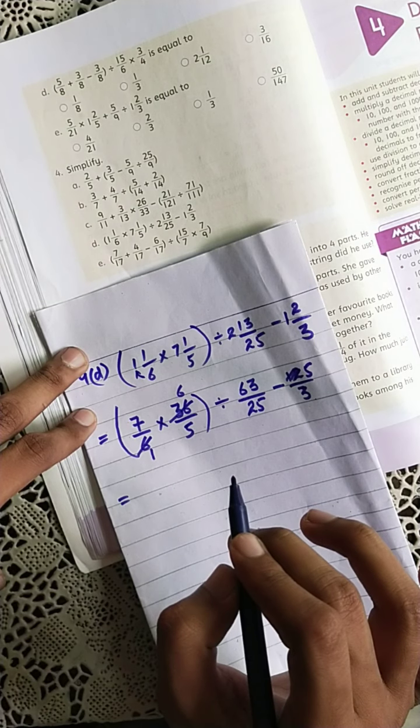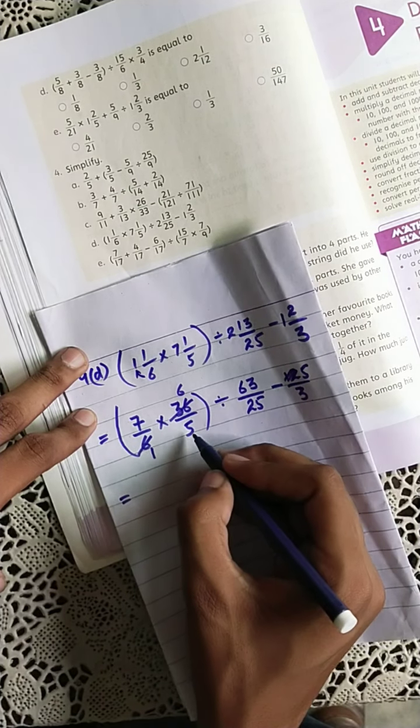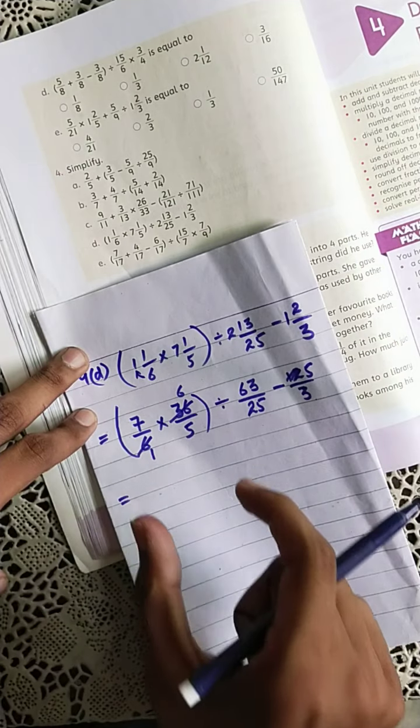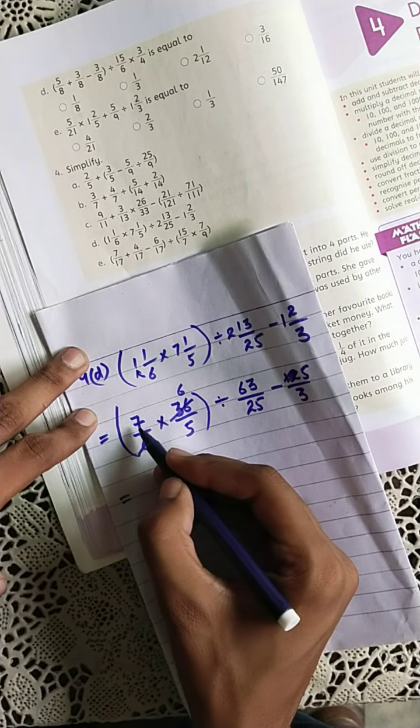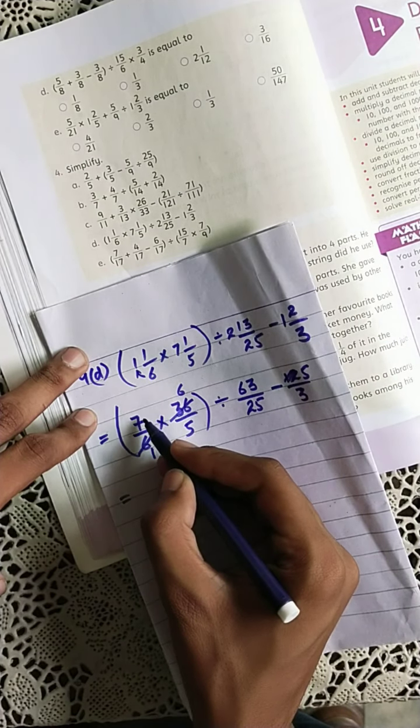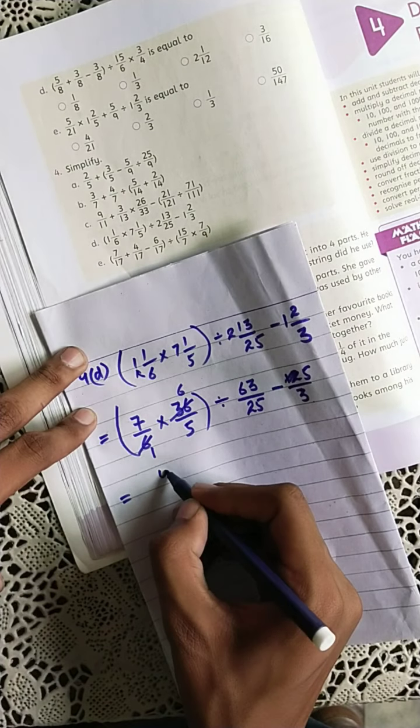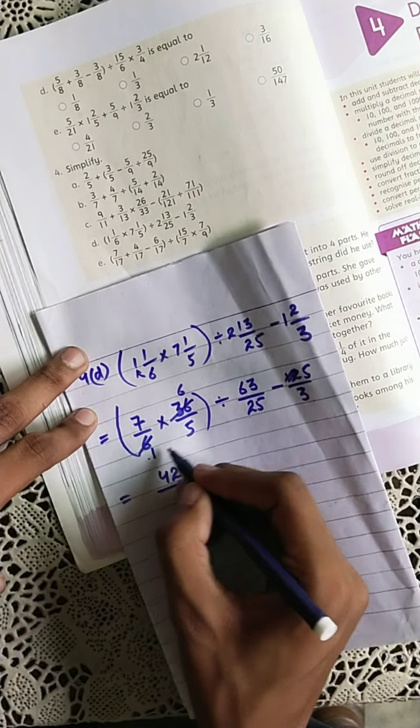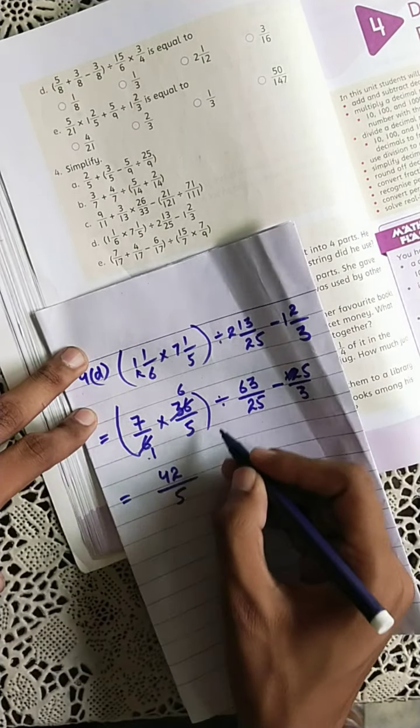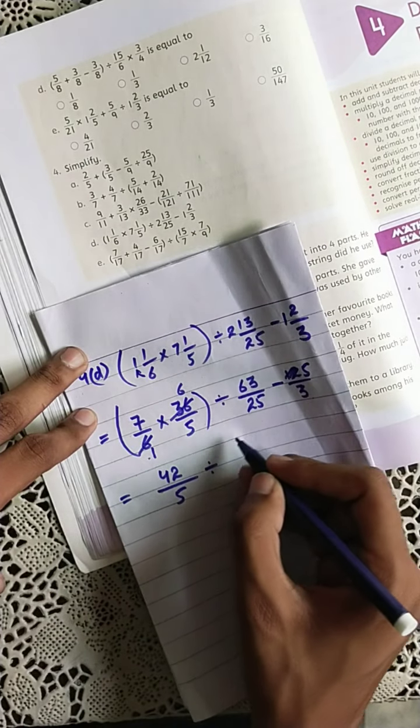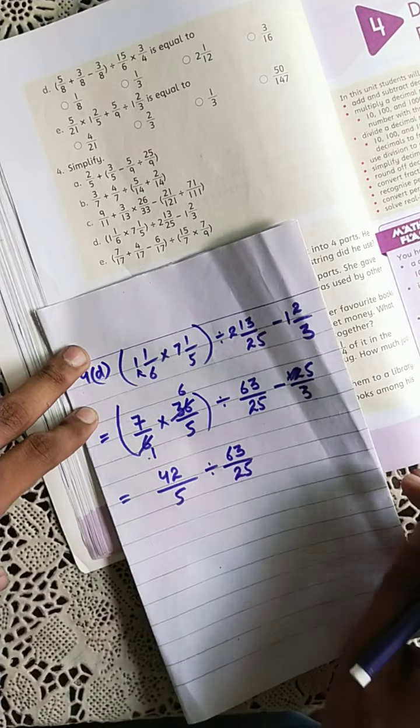So, 7 times 6 are 42, and in the denominator will be 5 times 1 which is 5. Now with the division sign, brackets are solved: 63 over 25, okay, and now on the last, 5 over 3. Clear.